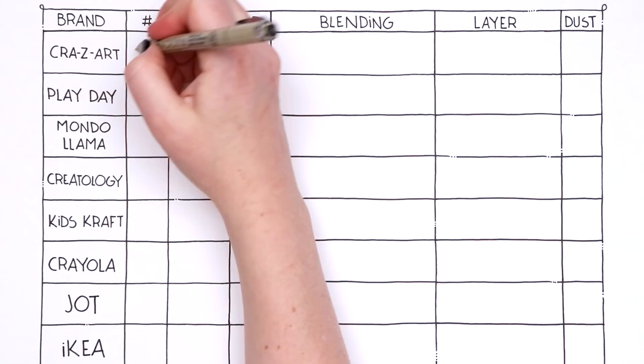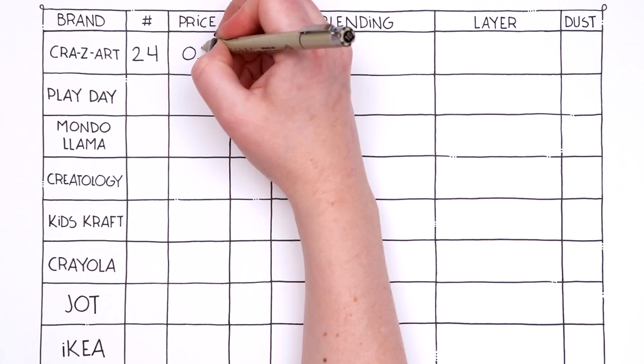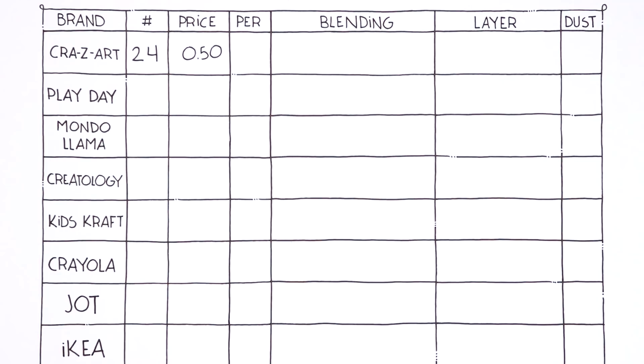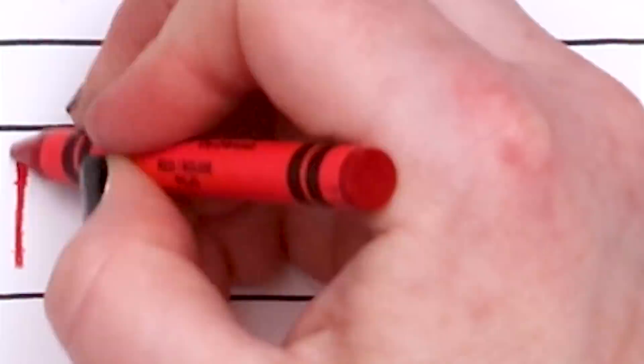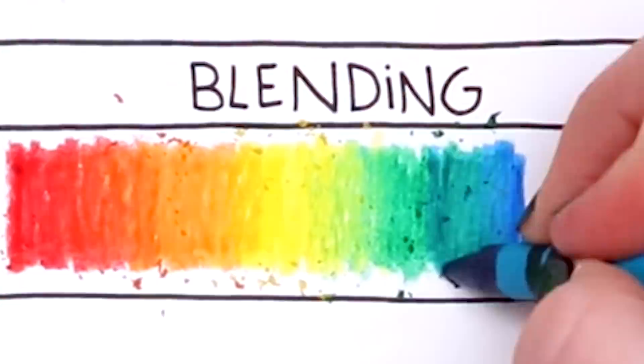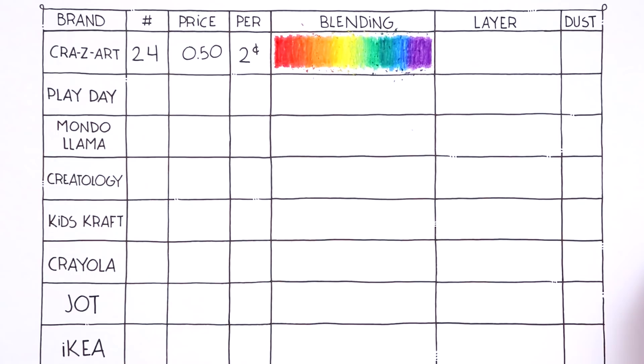Starting off with our first brand of crayon, we have Crazy Art. In our Crazy Art pack, we do have 24 crayons. This pack itself was only 50 US cents. Oh my god, that is incredibly cheap, which comes to 2 cents a crayon. That's ridiculous. At 2 cents a crayon, let's see how they blend. Starting off with red, working our way down the rainbow. They go down pretty smoothly. So far I do really like how smooth these crayons feel. 2 cents a crayon? I'm shook.